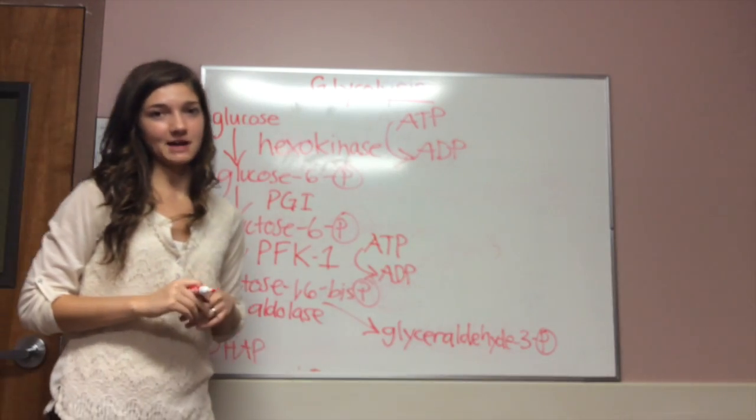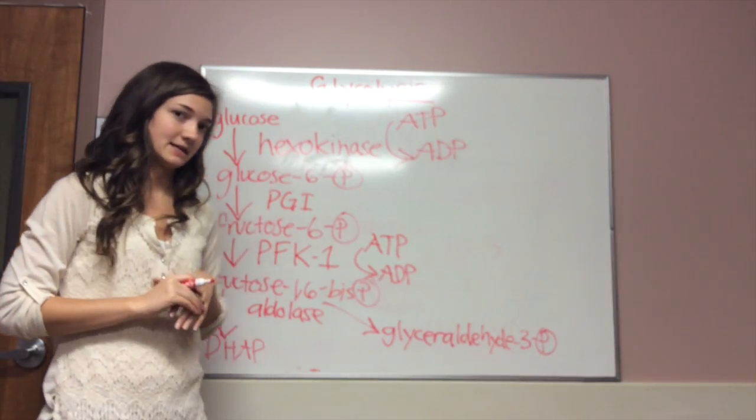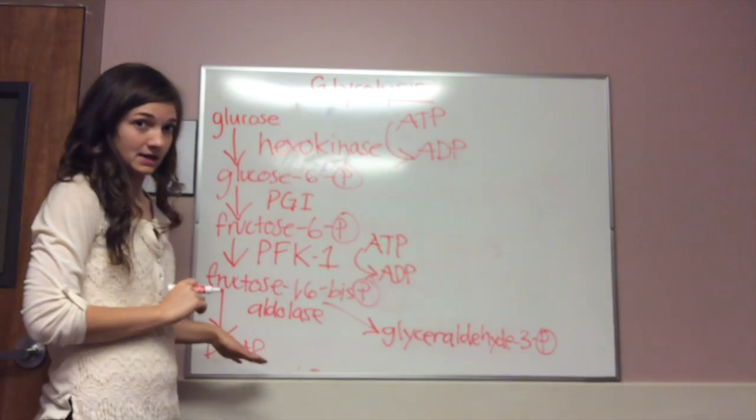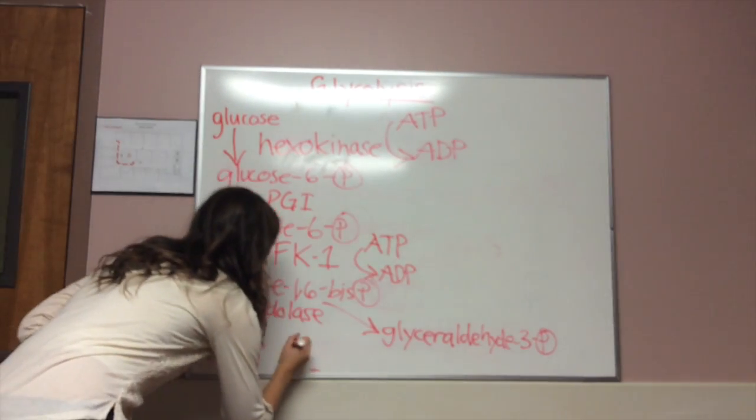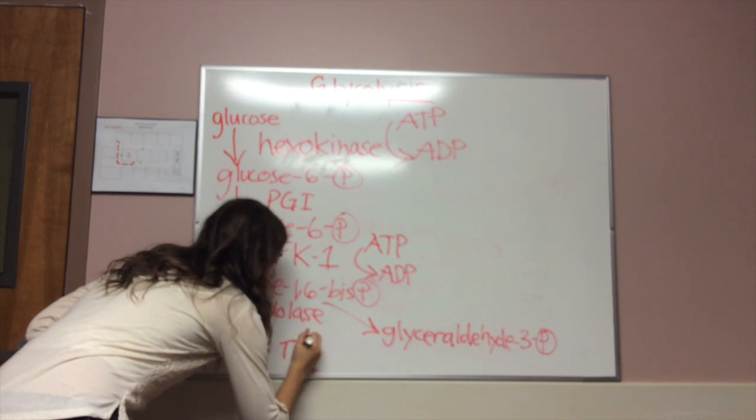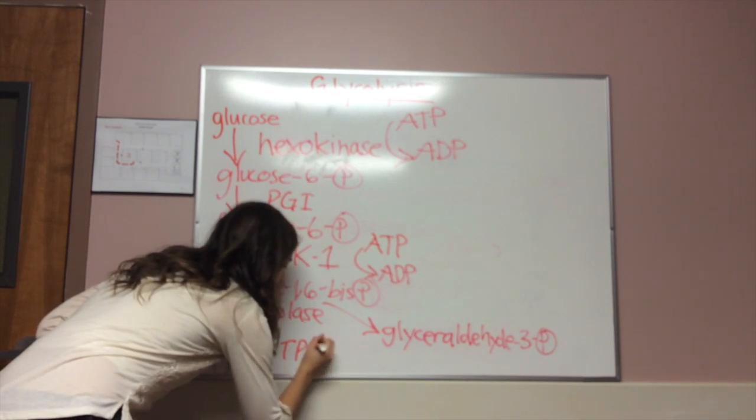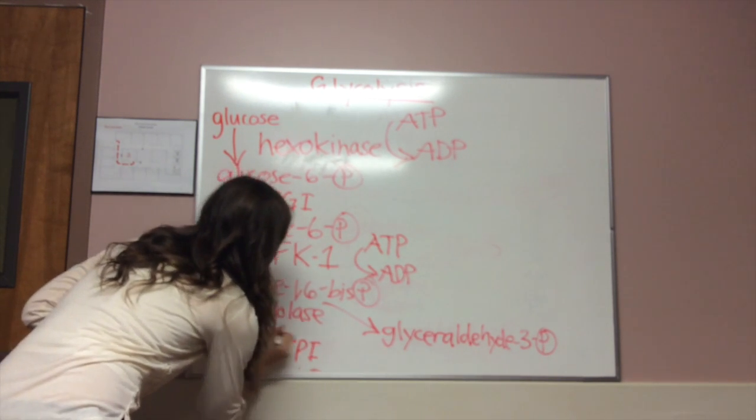In the fifth and final reaction of the energy investment stage, DHAP is converted into glyceraldehyde 3-phosphate. This is done with triose phosphate isomerase, often referred to as TPI.